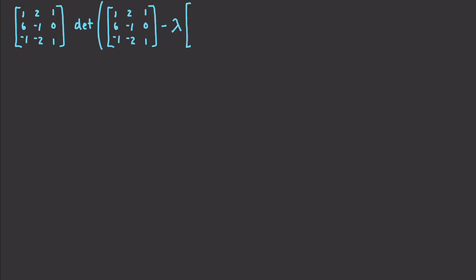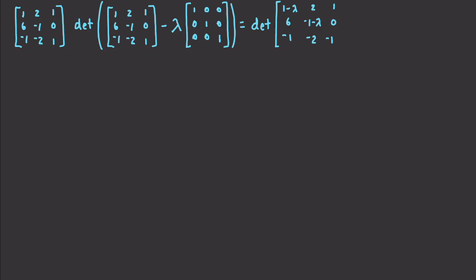Going to cut to the chase here. You've seen the identity matrix many times. If we work this through, we're going to end up getting the determinant of: 1 minus lambda, 6, negative 1; 2, negative 1 minus lambda, negative 2; 1, 0, negative 1 minus lambda. Now we're going to use yet another formula to figure out how to get the determinant with this.